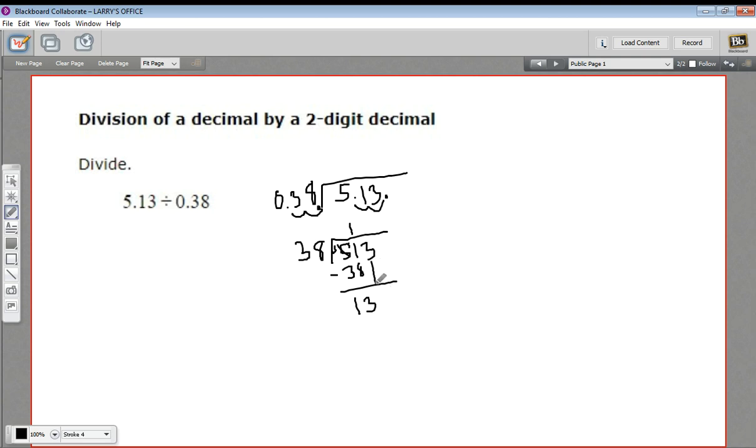So now we have 13. And we bring down the 3. So how many 38s go into 133? Well, let's see. I think 3. Yeah, 4 is too many. Because 4 times 3 would be 120. But 4 times 8 would be another 32. So that's too many. So 3 it is.